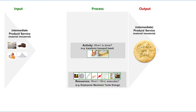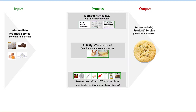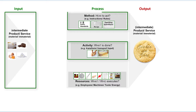Additionally, a method is needed to guide the resources for a certain activity. In our case, the methods used are the recipe, the operating instructions for our equipment, and some rules and standards that apply in the kitchen. These are the necessary components of every process: input, activity, method, resources, and output.